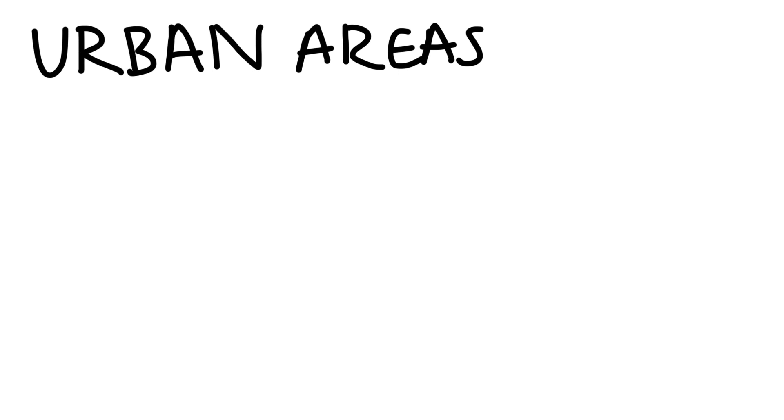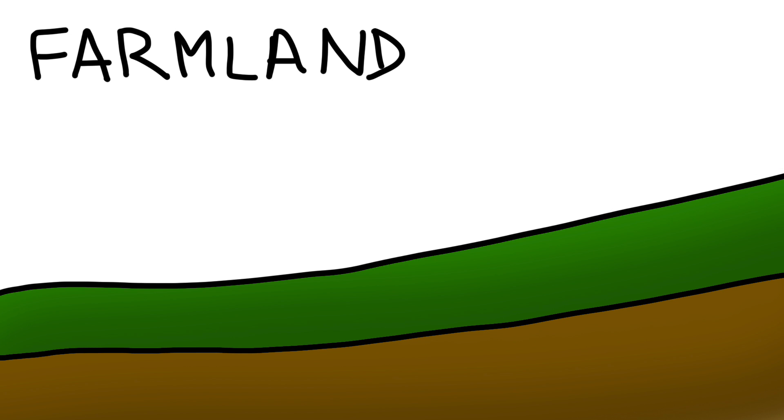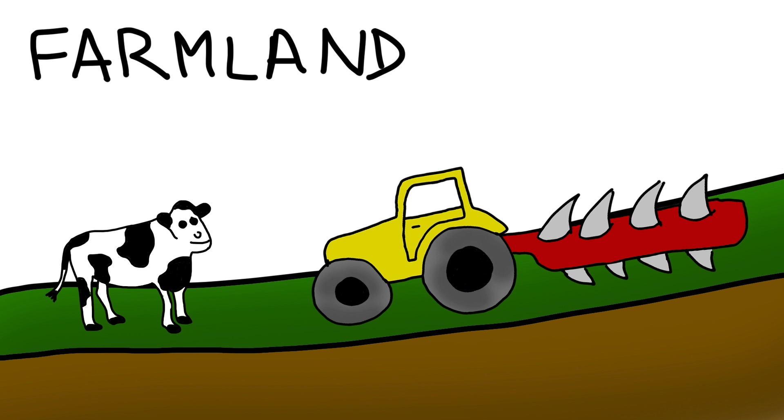Human activity also affects the hydrograph. In urban areas, houses and roads intercept precipitation, causing surface runoff to increase, reducing lag time. In farmland areas, grazing animals and ploughing compacts the soil, reducing interception and therefore lag time.